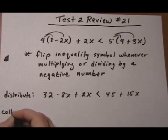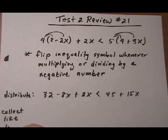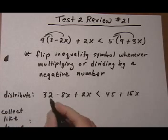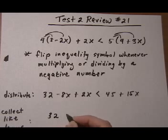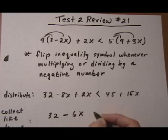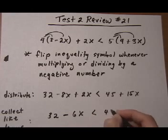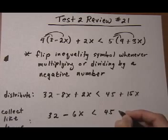Next step after distributing is collect like terms. Here we have minus 8x plus 2x, so that's going to give us bring down the 32 minus 6x, keep the inequality symbol like it is, less than 45 plus 15x.